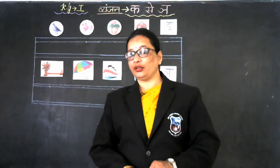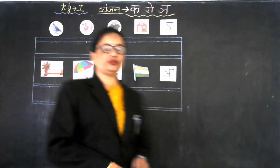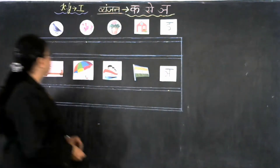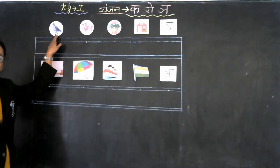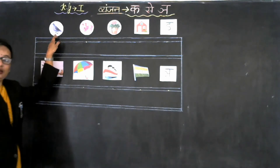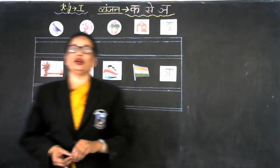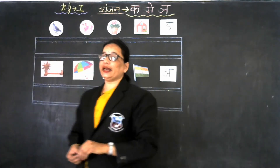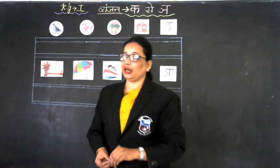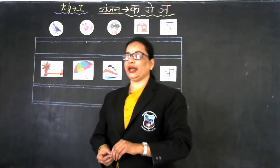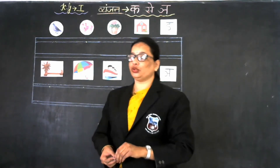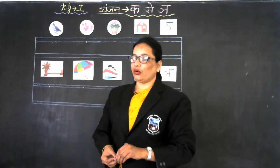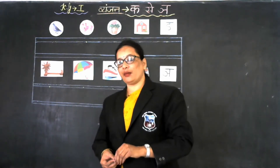Now look at the board. First picture is Ka. Ka se kya aata hai bachho? Ka se kamal. Ka se kabootar. Ka kabootar ka, or ka se kamal.